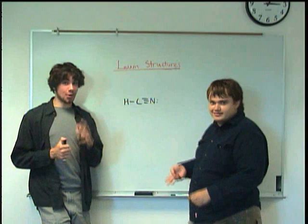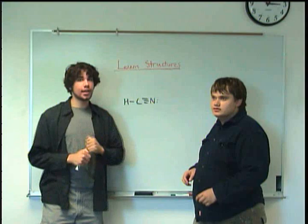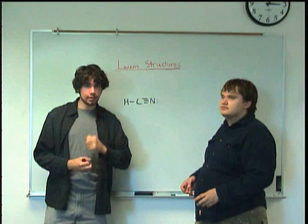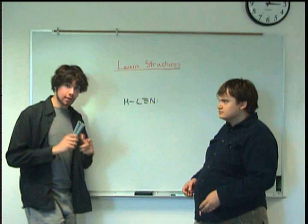Where did the dots go? I see all these lines. Basically what happened is that each of these little lines represents a bond, and in those bonds are two electrons — two valence electrons. And since all of these are bonded, it's a covalent bond, right? Covalent bonds involve sharing of electrons.